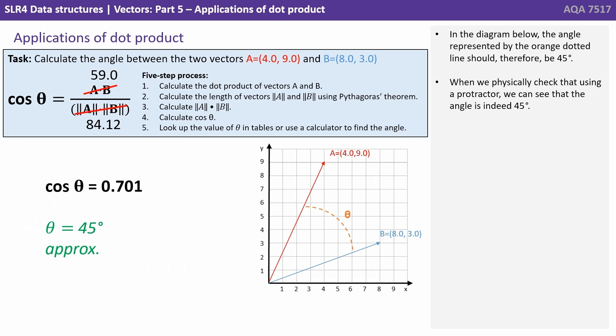In the diagram below the angle represented by the orange dotted line should therefore be 45 degrees. And when we physically check that using a protractor we can see the angle is indeed 45 degrees. Spot on.